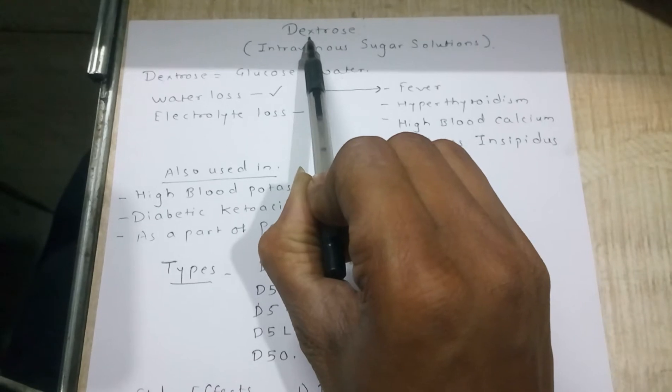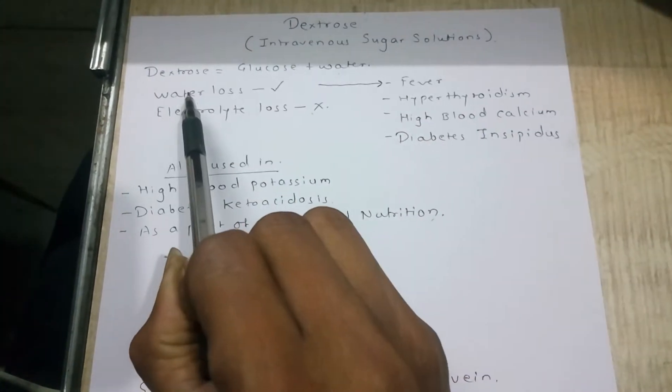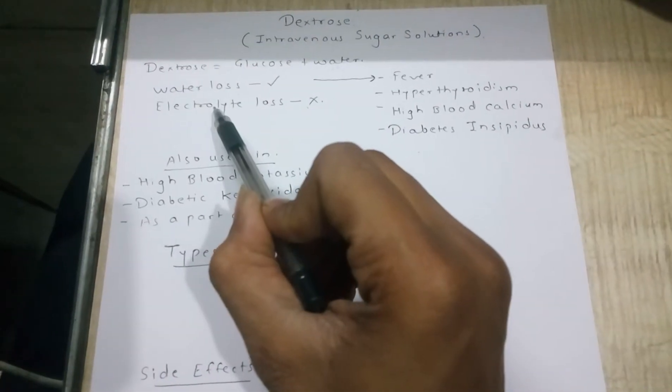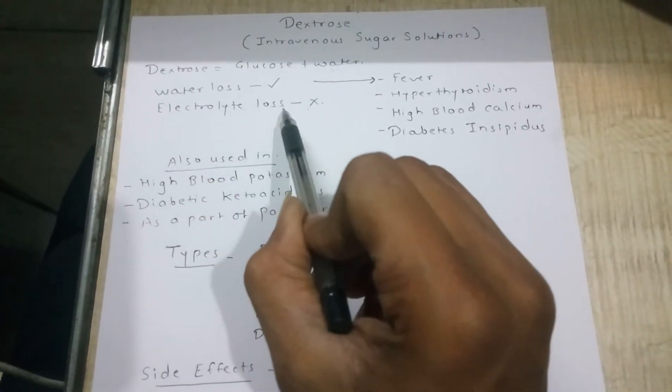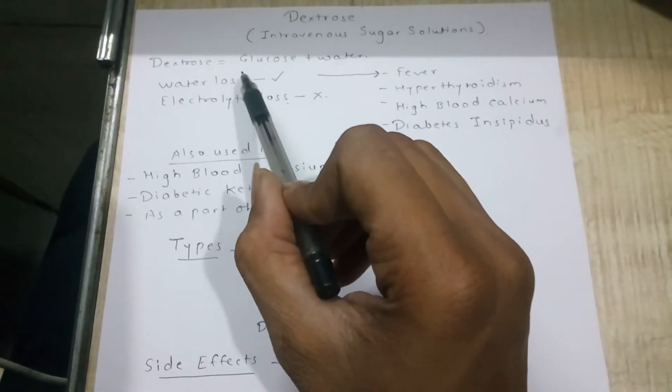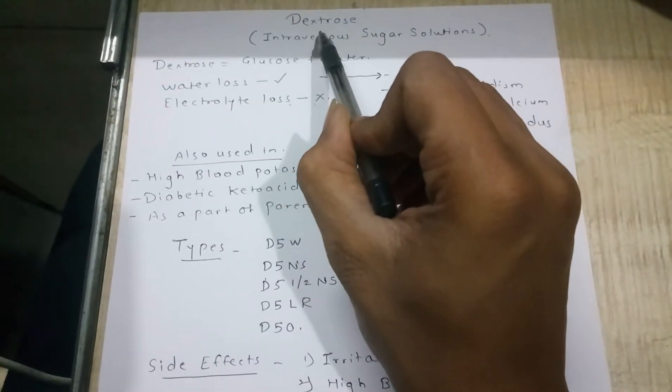When dextrose solution is used, it is used only in water loss and not in electrolyte loss. This is important because when electrolyte loss is observed, we use Ringer lactate solution. When water loss is observed, we use dextrose only.